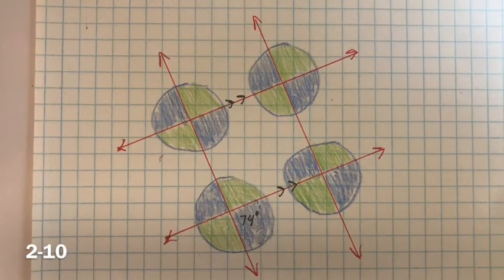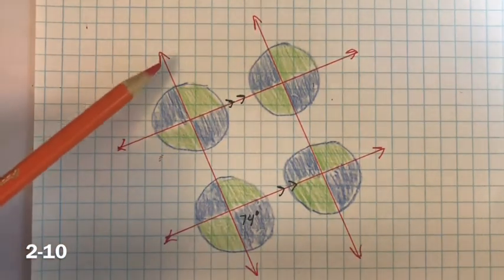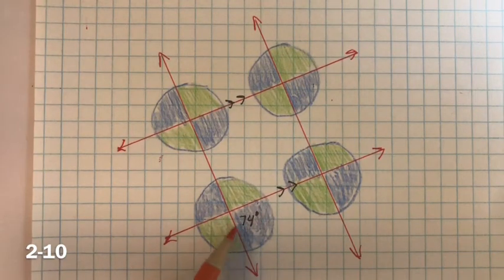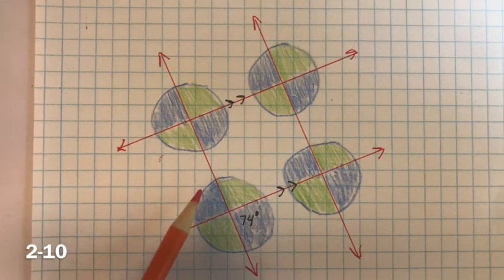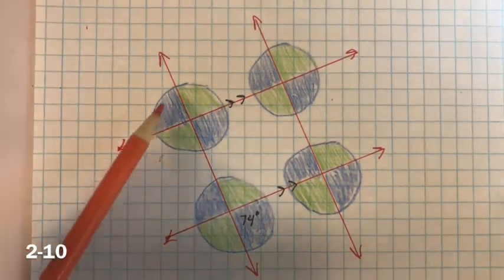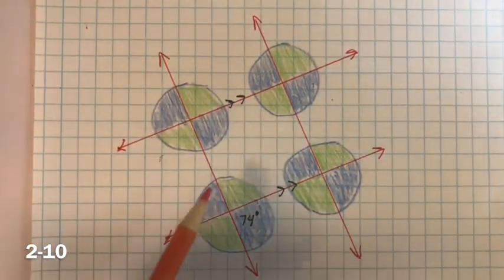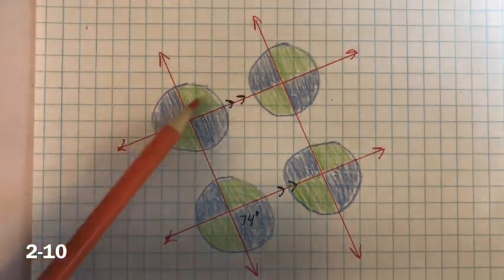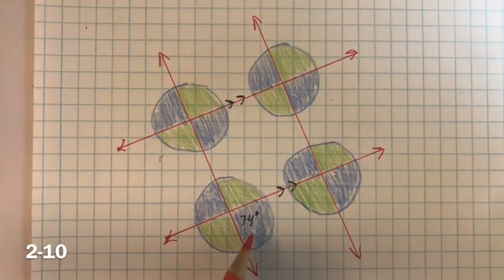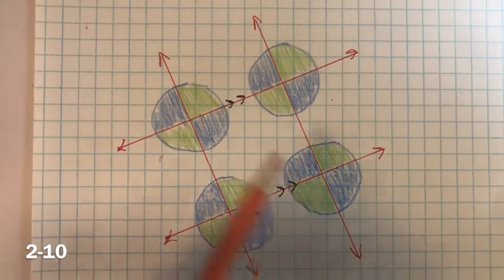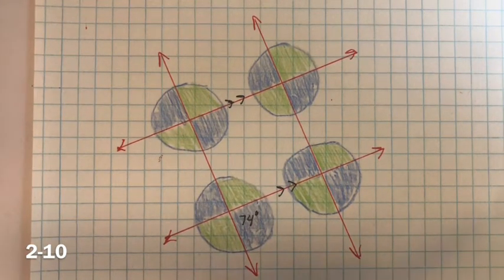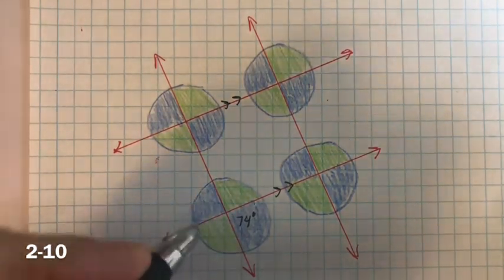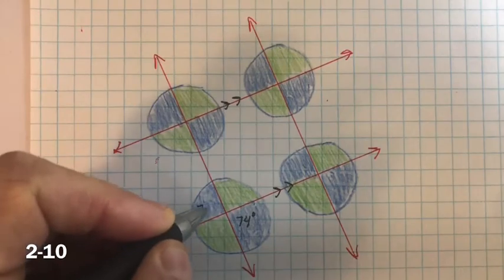Problem 2-10. We need to find the measures of the missing angles. We have two parallel lines cut by two transversals, and the only measure given is 74 degrees. To find unknown measures, I create what I call 'beach balls' — colored sections at each intersection. I mark them blue, green, blue, green around each intersection, following that pattern. All same-colored sections will have the same measure. These two angles are vertical angles, and vertical angles are congruent, so both are 74 degrees.